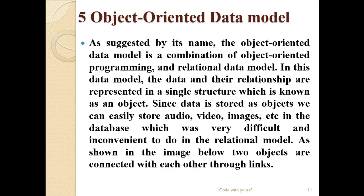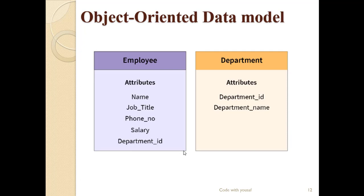The fifth one is the object-oriented data model. As suggested by its name, the object-oriented data model is a combination of object-oriented programming and the relational data model. In this data model, the data and the relationships are represented in a single structure known as an object. We can store video, image, and other data that is difficult to store in the relational model. For example, employee and department data are displayed in objects.